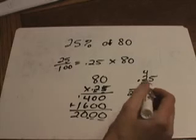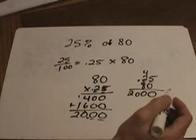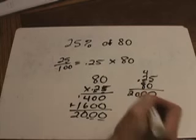Much quicker process. There's 2 numbers past the decimal point in the problem, 2 numbers past the decimal point in the answer.